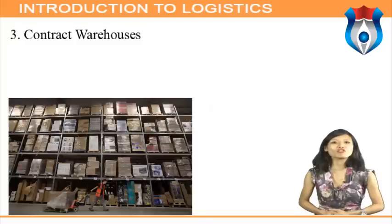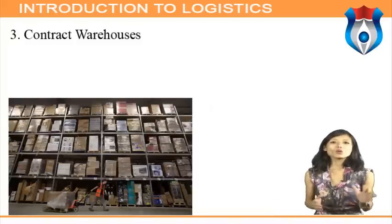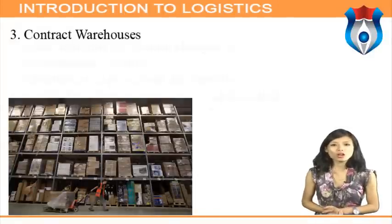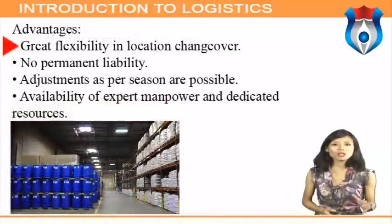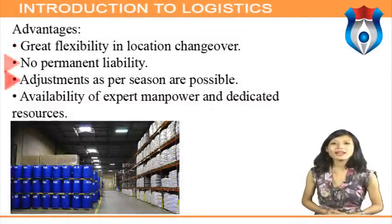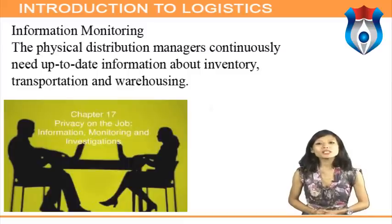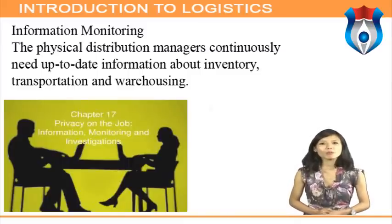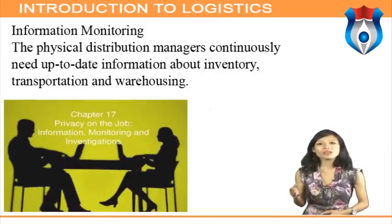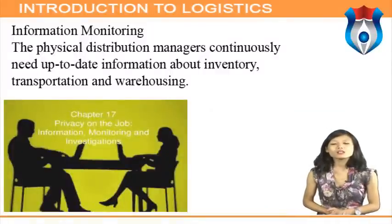Contract warehouses are a specialized form of public warehouses providing total warehousing services for agreed charges. Advantages include great flexibility, location changeover, no permanent liability, seasonal adjustments, availability of expert manpower, and dedicated resources. Information monitoring — physical distribution managers continuously need up-to-date information about inventory, transportation, and warehousing, including present stock positions at each location, future commitments, and replenishment capabilities.